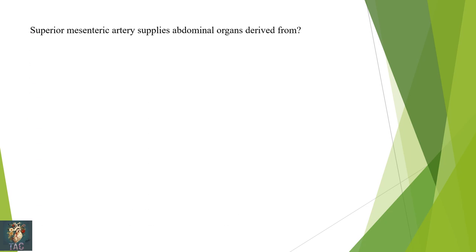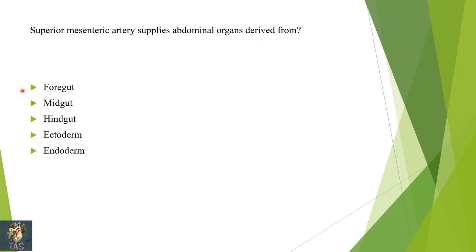Next: the superior mesenteric artery supplies abdominal organs derived from — foregut, midgut, hindgut, ectoderm, or endoderm? The artery of the foregut is the celiac artery, artery of the midgut is the superior mesenteric, and artery of the hindgut is the inferior mesenteric. Please remember this MCQ can appear in many different ways in exams. Correct option is B: midgut.